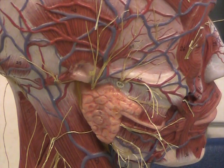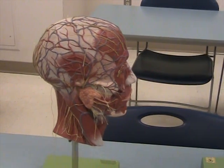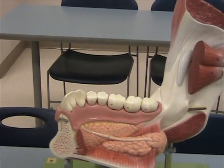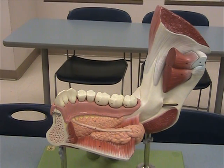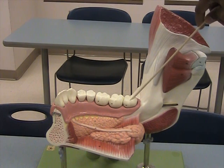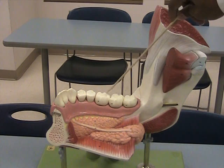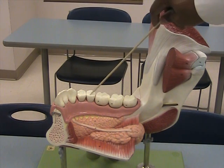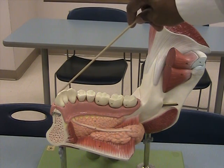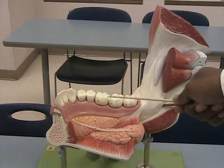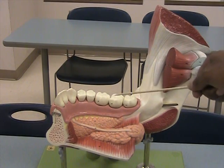Inside the mouth we can use this giant jaw model to see the different teeth used to digest food. Starting at the back, you've got the molars and wisdom teeth, which are used to grind food. Then there are the premolars, the cuspid, and then the incisors up front. These are used for mechanical breakdown of food — that's mechanical digestion.